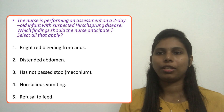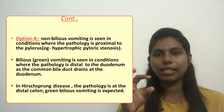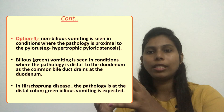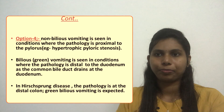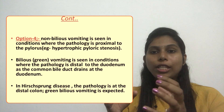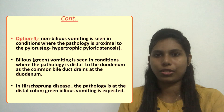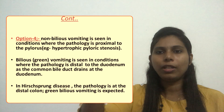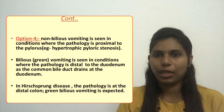Option four says non-bilious vomiting — that is a wrong statement. A child with Hirschsprung's disease will have bilious vomiting because the pathology is distal in the colon or large intestine. Non-bilious vomiting is seen in conditions where the pathology is proximal to the pylorus, for example hypertrophic pyloric stenosis. So in Hirschsprung's disease it will be bilious vomiting, making option four a wrong answer.